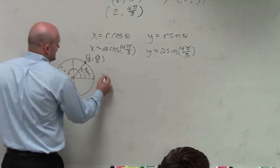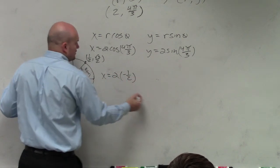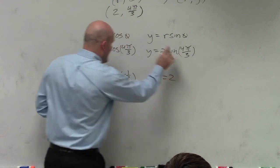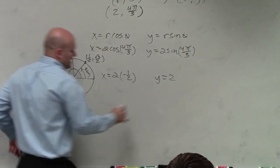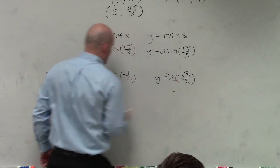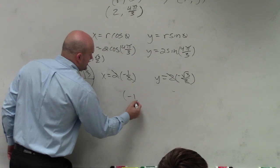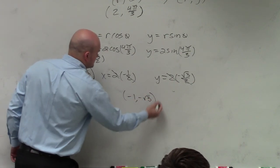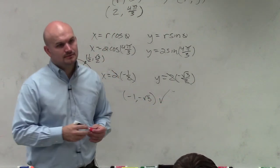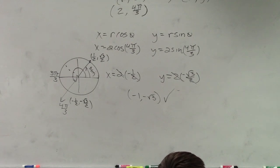So therefore, x equals 2 cosine of 4π over 3 is going to be negative 1/2. y equals 2 sine, which is negative √3 over 2. The 2's divide out, 2's divide out. My x-coordinate is negative 1, negative √3. That's it. Now, like I said, you could type this in your calculator.